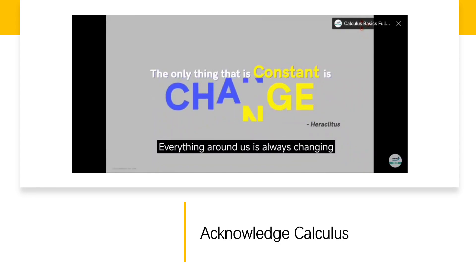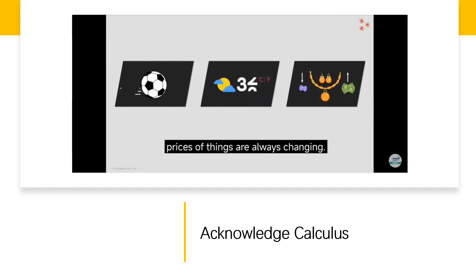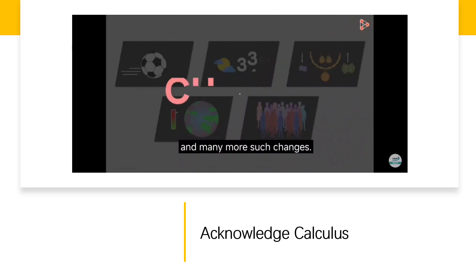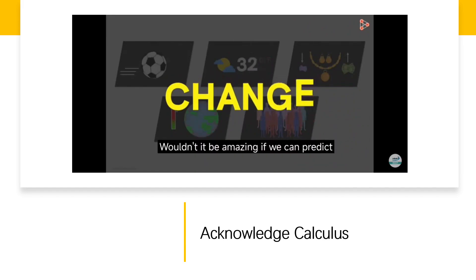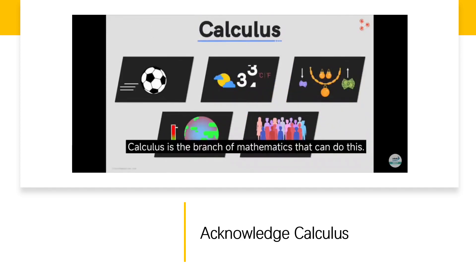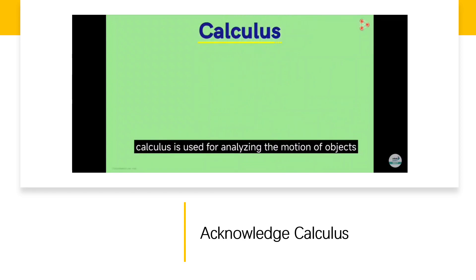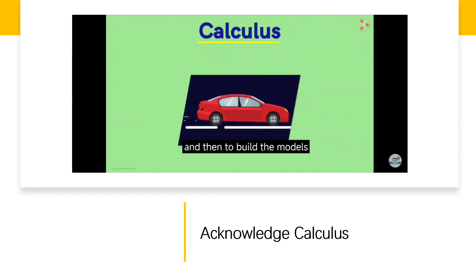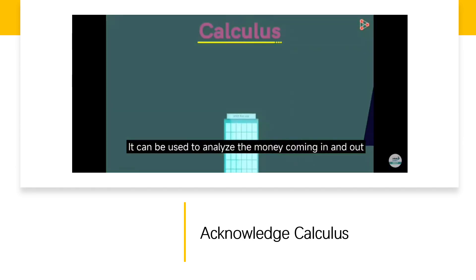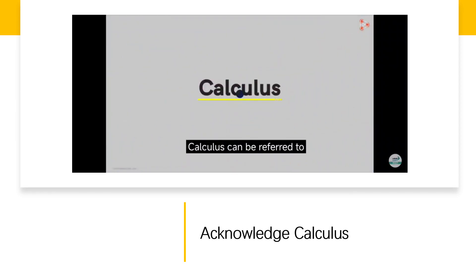The only thing that is constant is change. Everything around us is always changing: we see things moving, the weather keeps changing, prices of things are always changing, the temperature of the earth keeps rising, our population keeps increasing, and many more such changes. Wouldn't it be amazing if we can predict how things are going to change? Well, in many cases, calculus is the branch of mathematics that can do this. For example, calculus is used for analyzing the motion of objects and then to build the models to predict the trajectory of things like rockets.